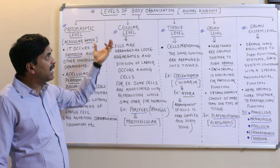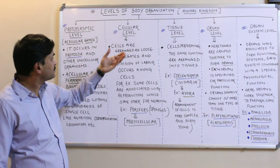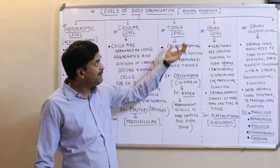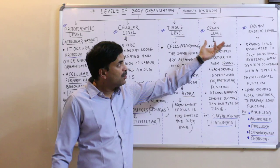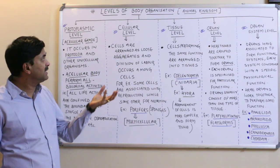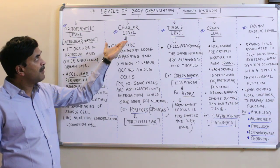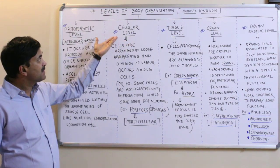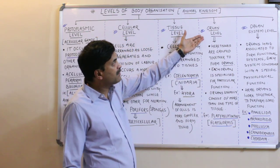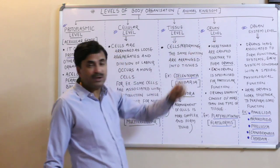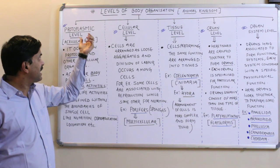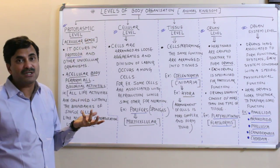These levels of body organization are of five types: protoplasmic level, cellular level, tissue level, organ level, and organ system level. In general, your books show only four types — cellular grade, tissue grade, organ grade, and organ system level — but there is one more level, known as the protoplasmic level of body organization.